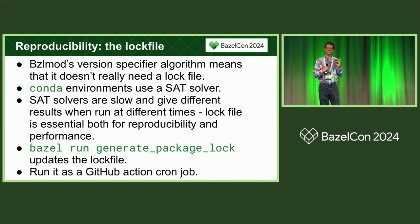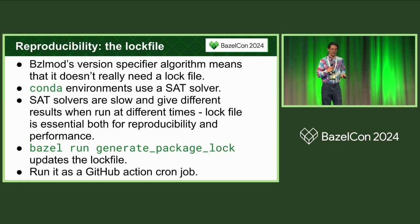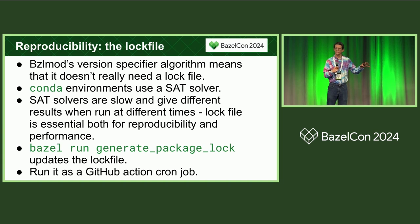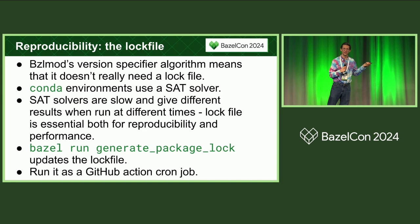Bazel mod doesn't need a lock file because of its minimum version selection algorithm — you should get the same version resolutions from a given commit every time, in theory. Conda is not that way; it uses a more traditional SAT solver with greater-than/less-than constraints, and getting the same solution every time just isn't going to happen because the remote repository gets updated. So we need to store a lock file. This isn't bad or scary — we have a quick command to update it and run it in a GitHub Actions cron job that opens a PR and updates it in about a minute.